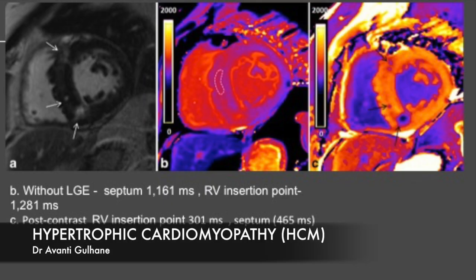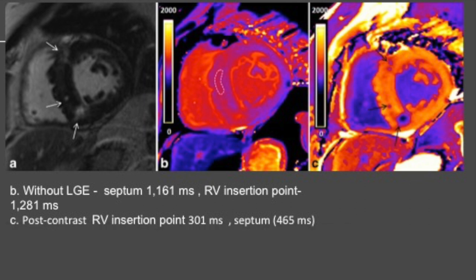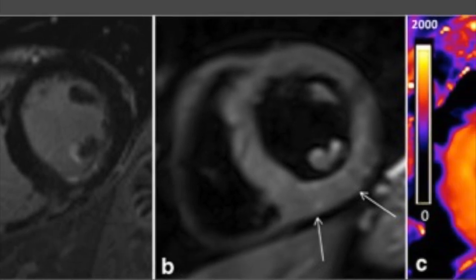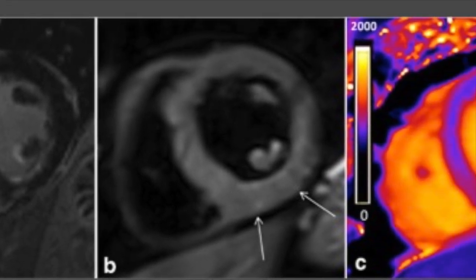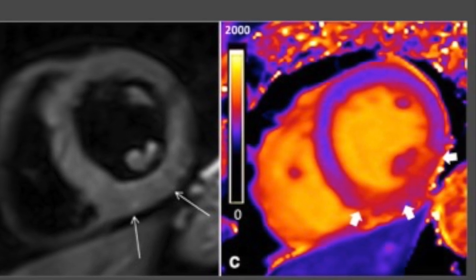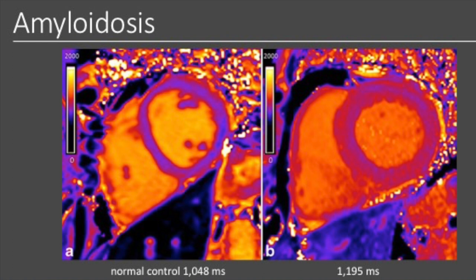In a patient with HCM, there was enhancement at the superior and inferior RV insertion points but not much in the septum; however, T1 mapping showed elevated T1 values in the septum, identifying myocardial fibrosis. Another patient with acute myocardial infarction showed only a subendocardial infarct in the inferior LV, but T1 mapping identified a rather larger area at risk. Another example is a patient with amyloidosis showing significantly increased native T1 values.